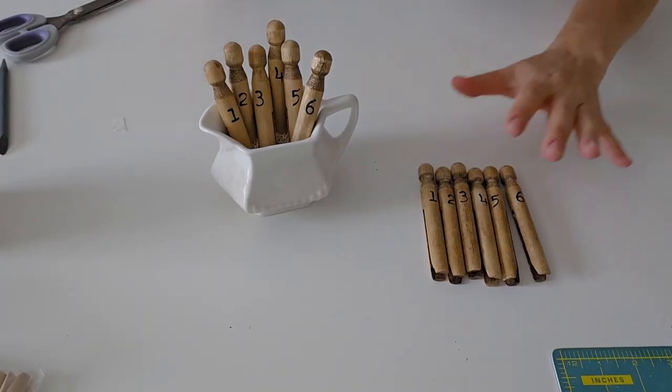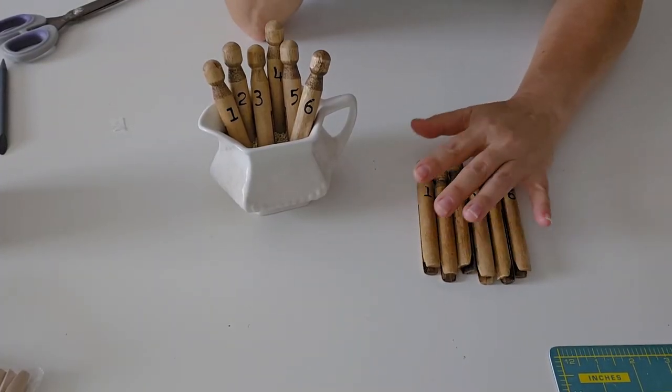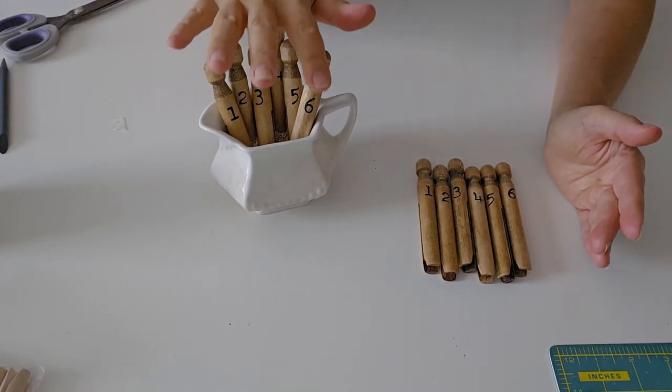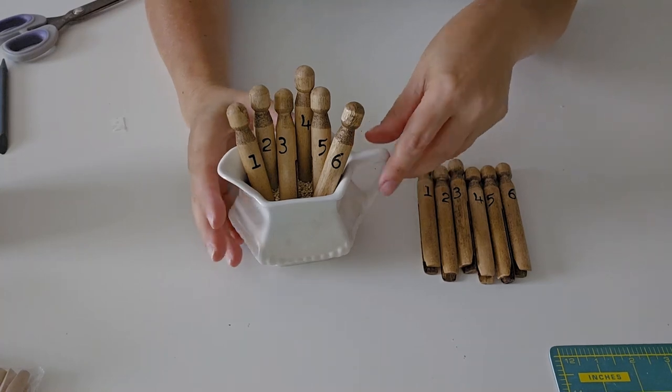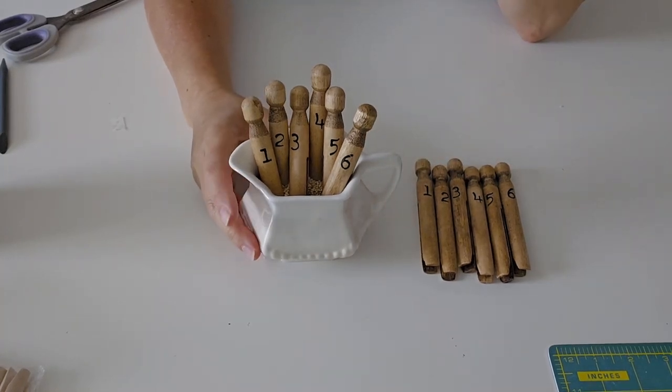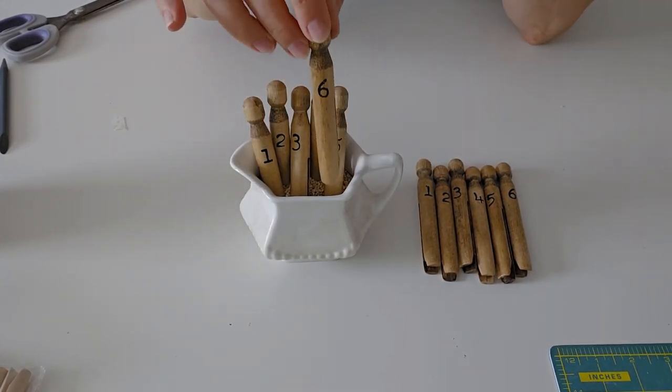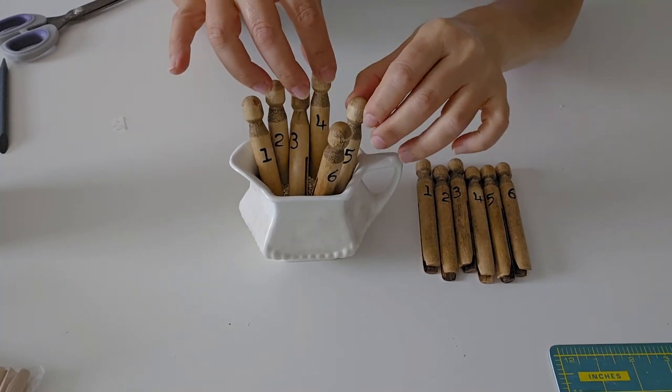So if you have a actual clothesline in your yard these would be so cute to use outside. For this display I just use a little creamer that I found at Goodwill and I filled it up with rice. You could also use quinoa or maybe dried beans.